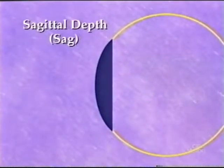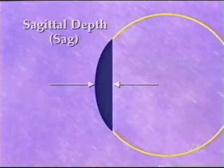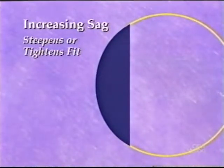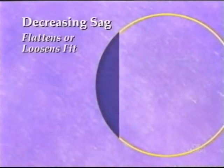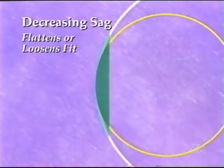A contact lens of a given base curve and diameter will have a specific sagittal depth or sag. This is the perpendicular distance between the center of the back lens surface and the plane of the edge of the lens. Increasing the sagittal depth steepens or tightens the fit by either increasing the diameter or steepening the base curve. Decreasing the sagittal depth flattens or loosens the fit by either decreasing the diameter or flattening the base curve.